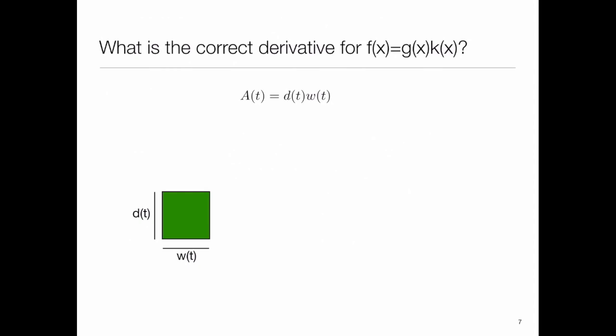In this example I have a green square that's changing. Its depth, d of t, is given by the height of this bar on this side, and its width is given by w of t.